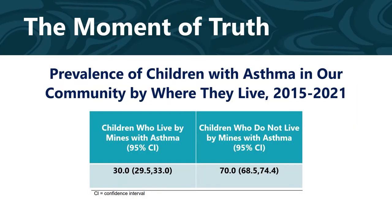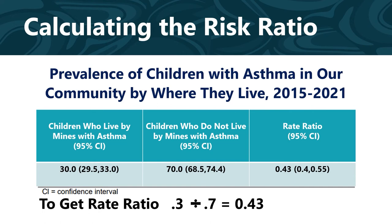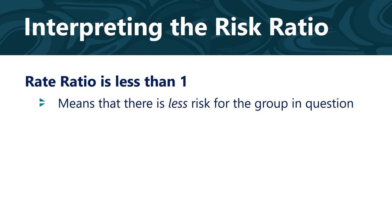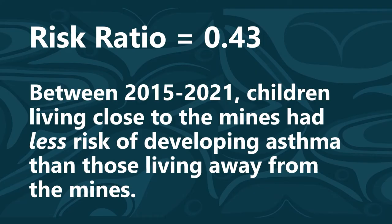As you can see, between 2015 and 2021, 30% of the children who lived close to the mines had asthma, and 70% of the children who did not live close to the mines had asthma. To get the rate ratio, you divide 30% by 70% (0.3 divided by 0.7), which equals 0.43 — which is less than one. You know that when a rate ratio is less than one, it means there is less risk for the group in question. You call your tribal leader back and tell her that based on the data from the clinic between 2015 and 2021, children living close to the mines actually had less risk of developing asthma than those living away from the mines — not more, like she had worried.